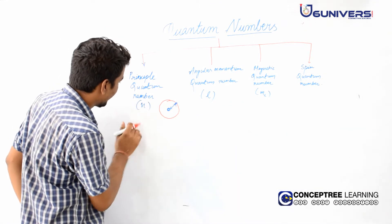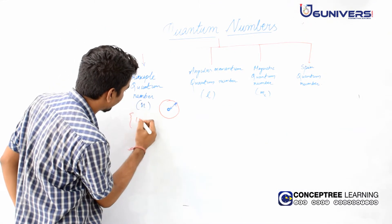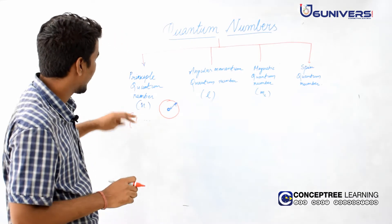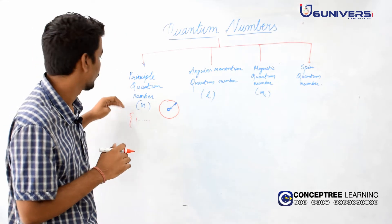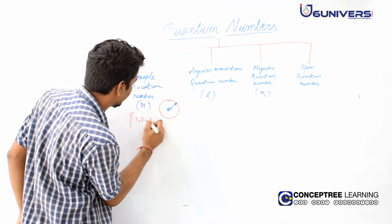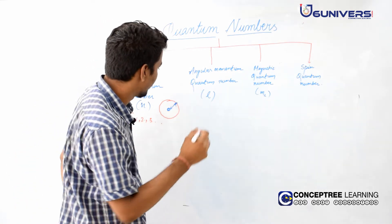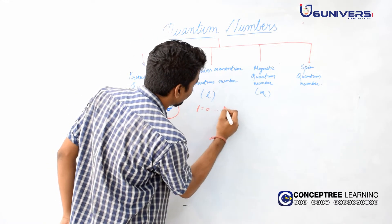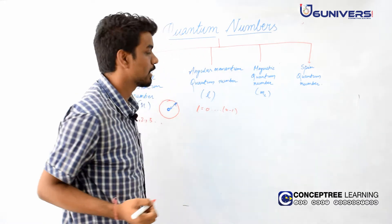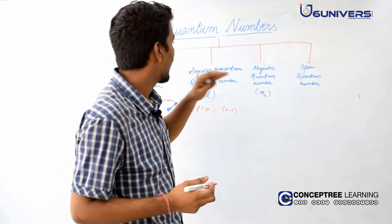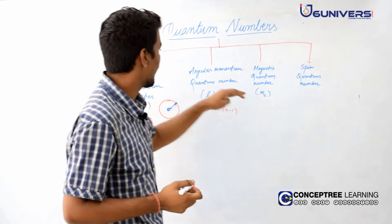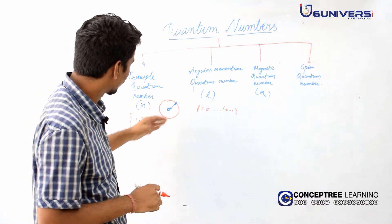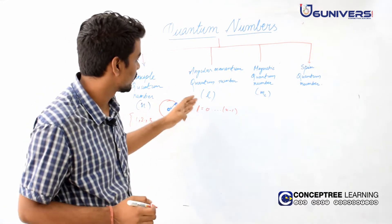N varies from 1 to any natural number — it can be 1, 2, 3, and so on. L can be 0 to n minus 1. N goes from 1, 2, 3 and so on, and l goes from 0 to n minus 1.